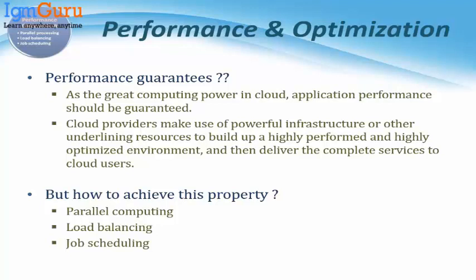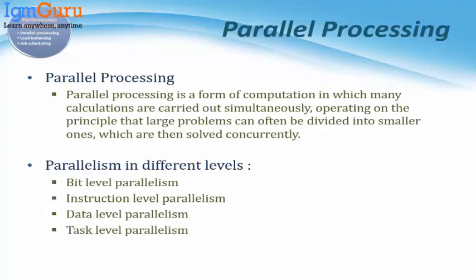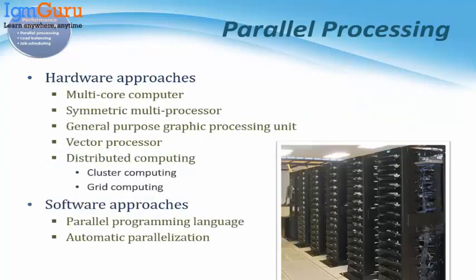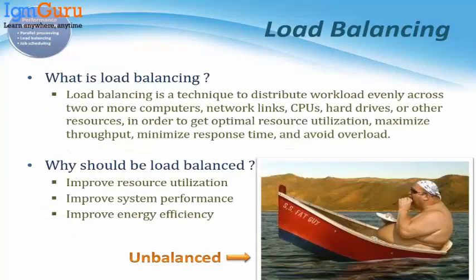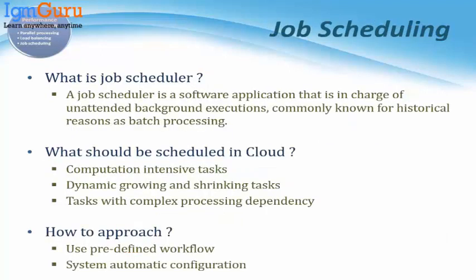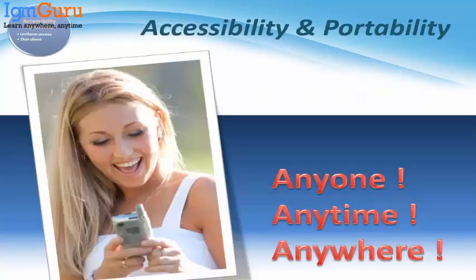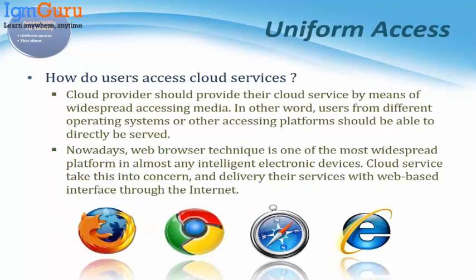Regarding performance, you have a lot of parallel computing — bit-level parallelization, data-level parallelization, and task-level parallelization. This improves resource utilization, system performance, and avoids a single point of failure. Job scheduling and load balancing are key. The next important property is accessibility — in cloud it means anyone, anytime, anywhere, which is one of the key requirements mentioned in SOA.